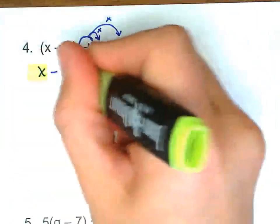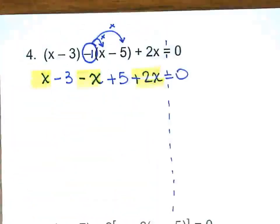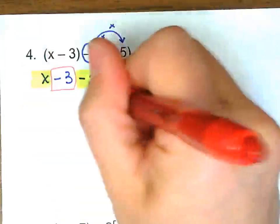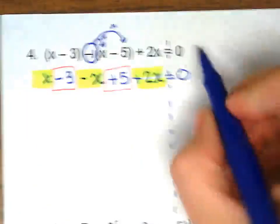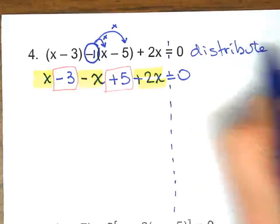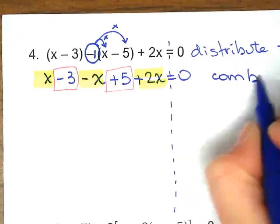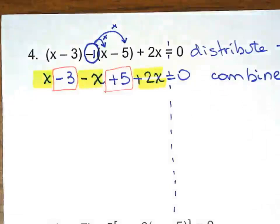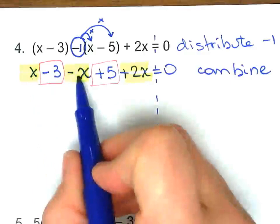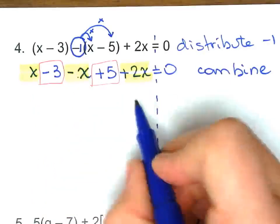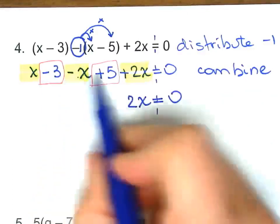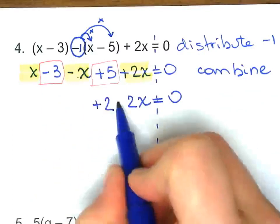Combine. So here we distribute negative 1. Here we combine. 1 minus 1 plus 2 is 2x. Negative 3 plus 5 is positive 2.